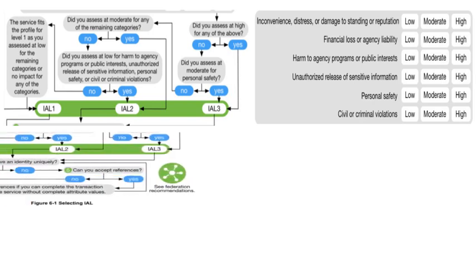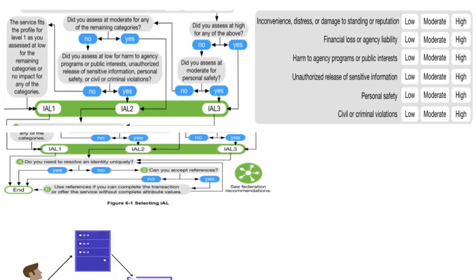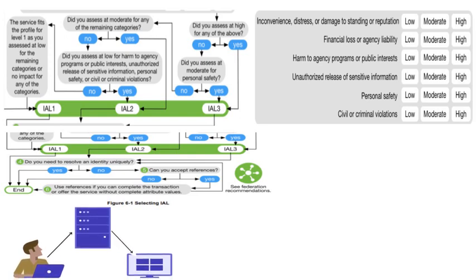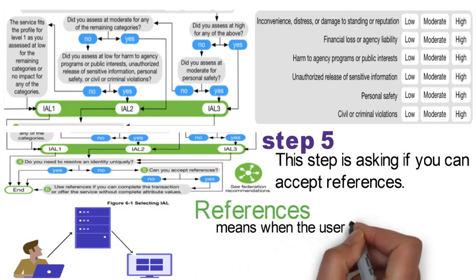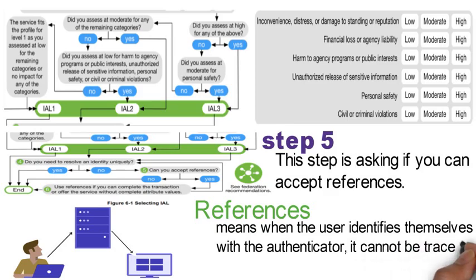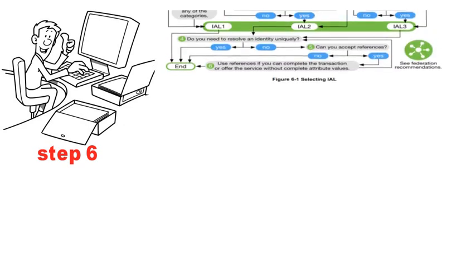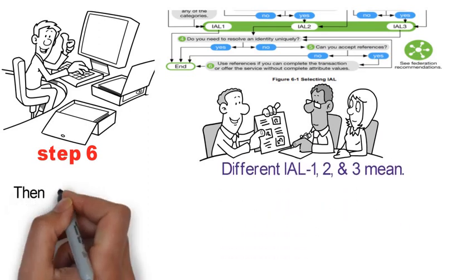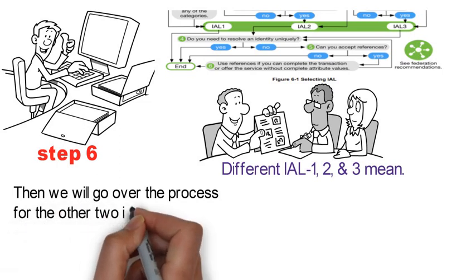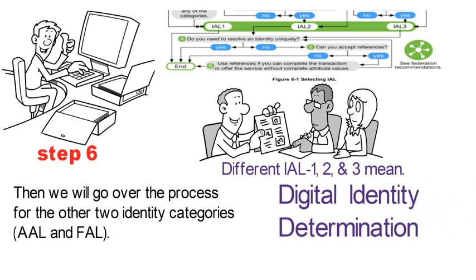If you have IAL 2 or 3, you will need to proceed to step 4, where you will determine if you need to resolve an identity uniquely — basically, whether your identity value can be linked to a specific person. If it cannot, then proceed to step 5, which asks if you can accept references, where identifying the user cannot be traced back directly to that person. If possible, it is recommended you do so in step 6 to minimize security risk. In the next section, we will review what IAL 1, 2, and 3 mean, then go over the process for AAL and FAL, and finally bring it all together to finalize the digital identity determination. Stay tuned.